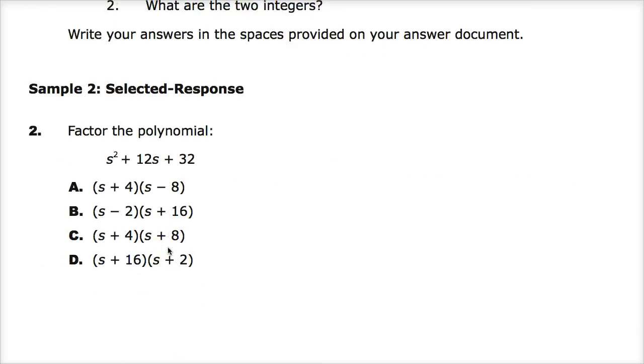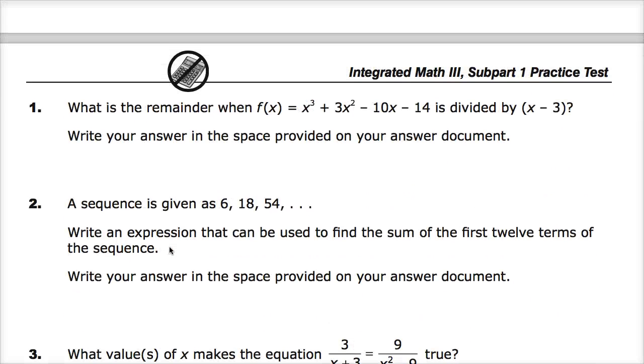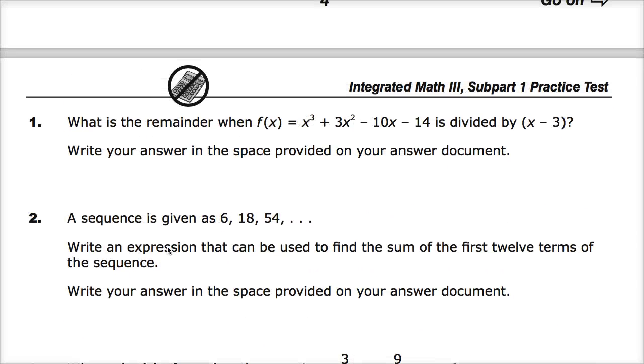Yay. They teach you to use them and they take them away. Anyway, the question says a sequence is given as 6, 18, 54. Write an expression that can be used to find the sum of the first 12 terms of the sequence, and write your answer in the space provided.